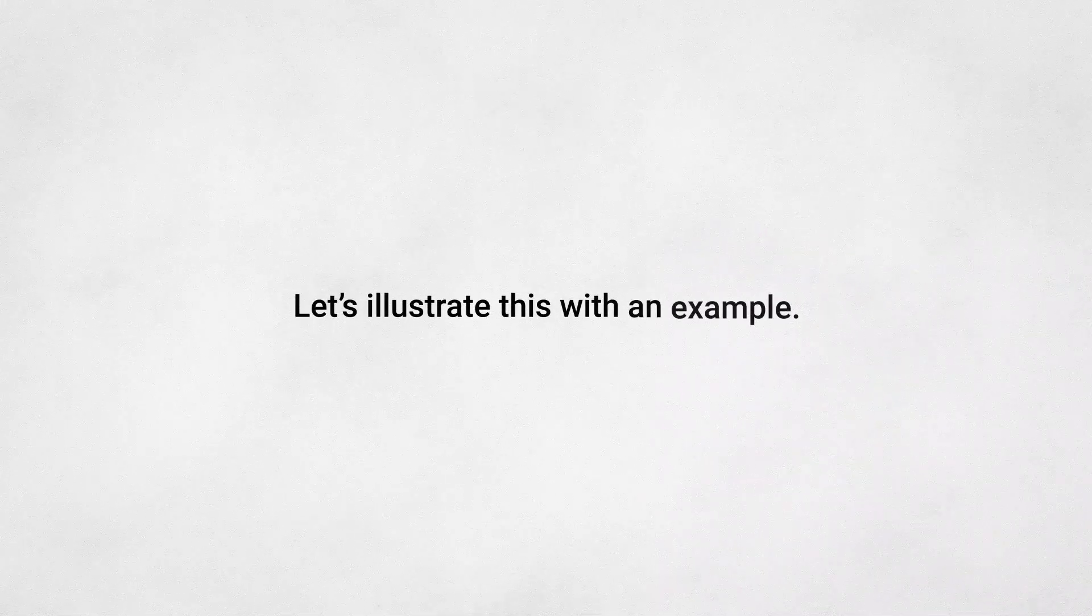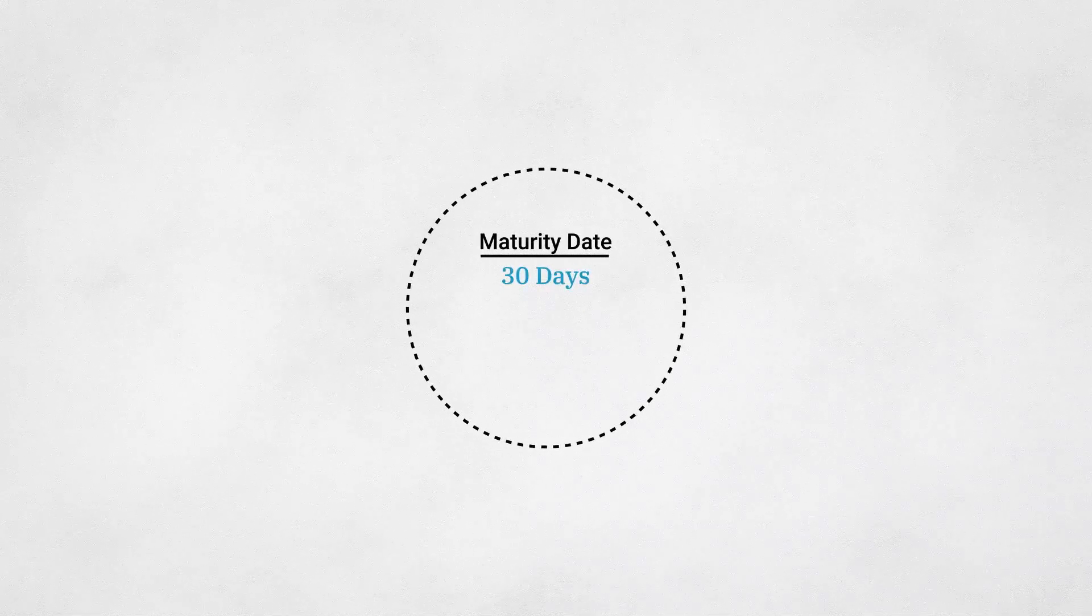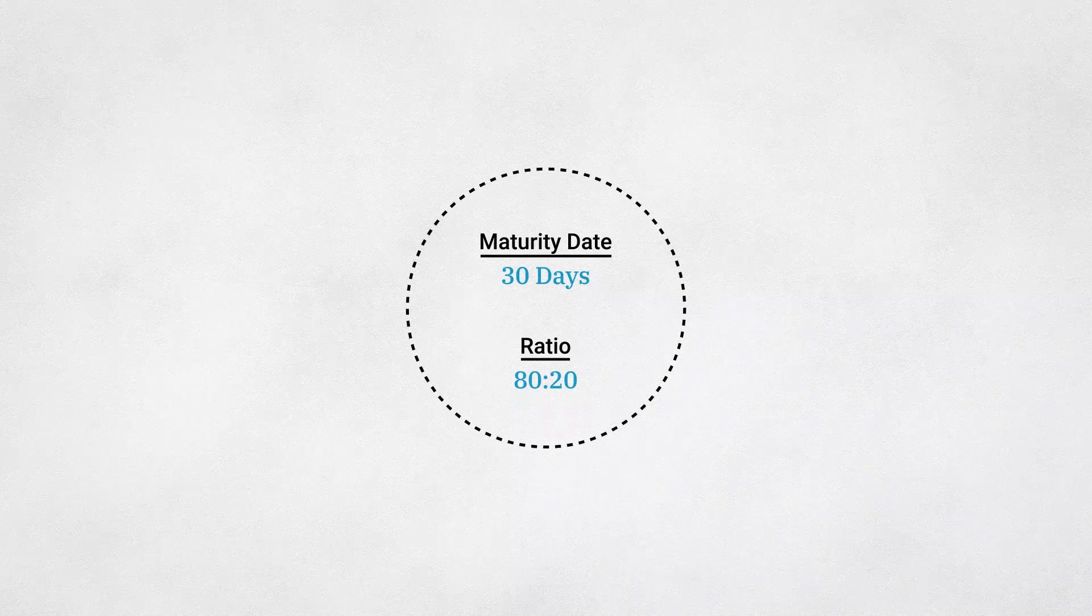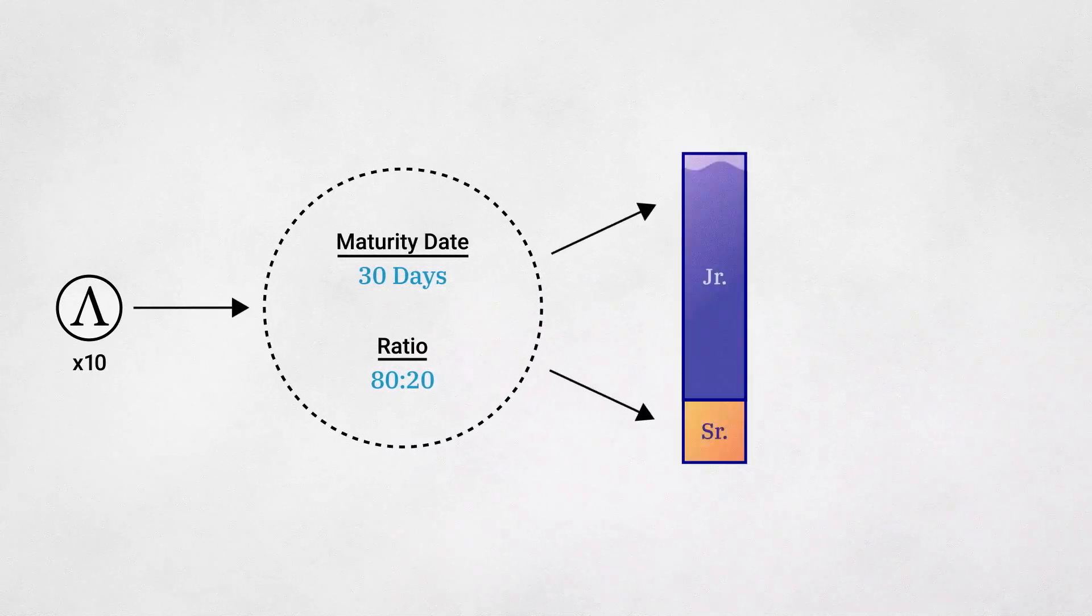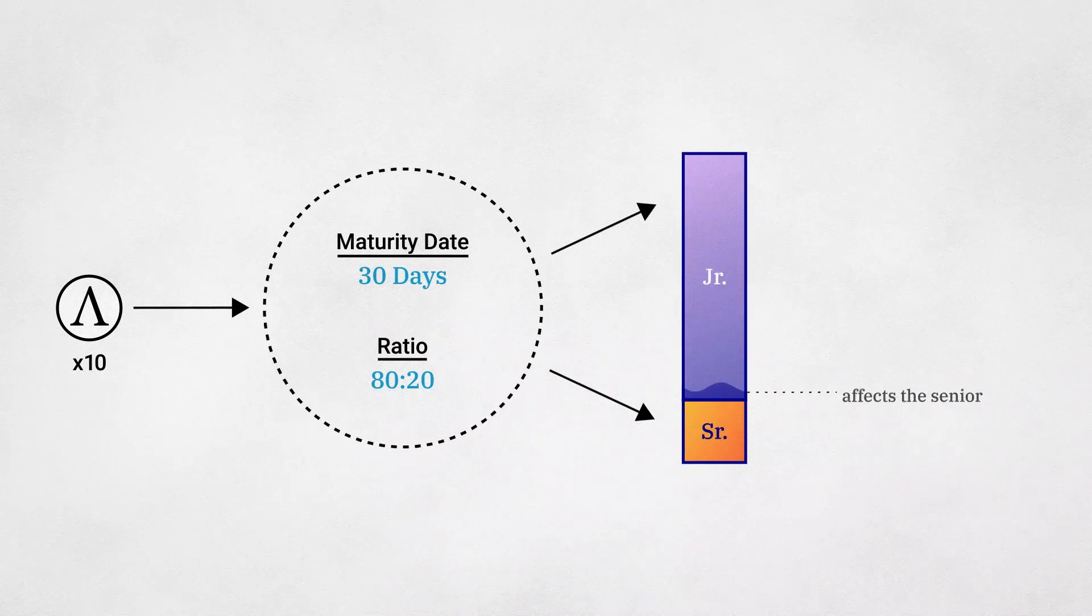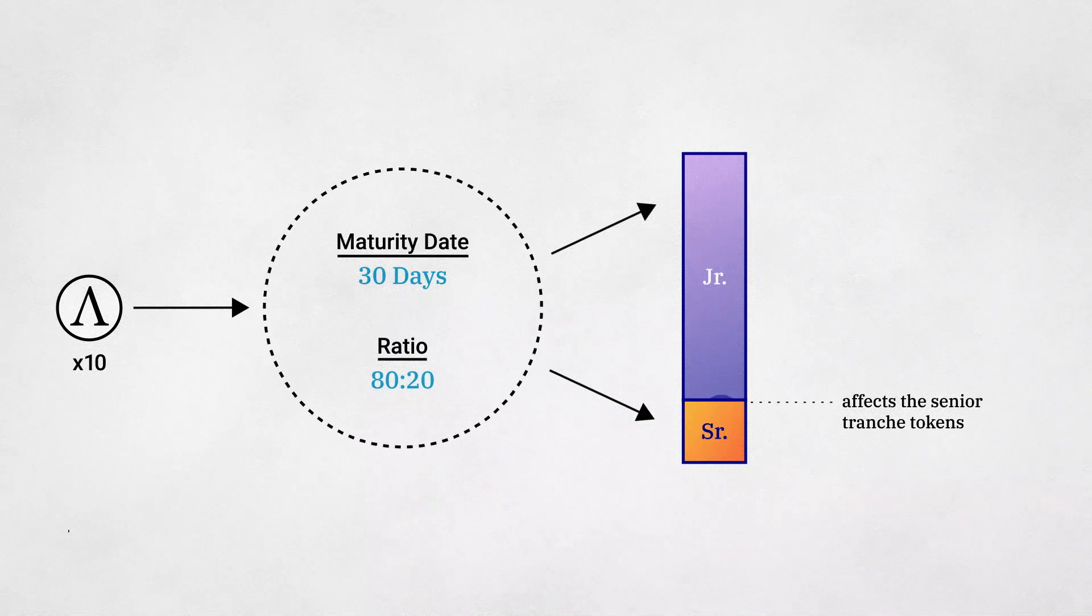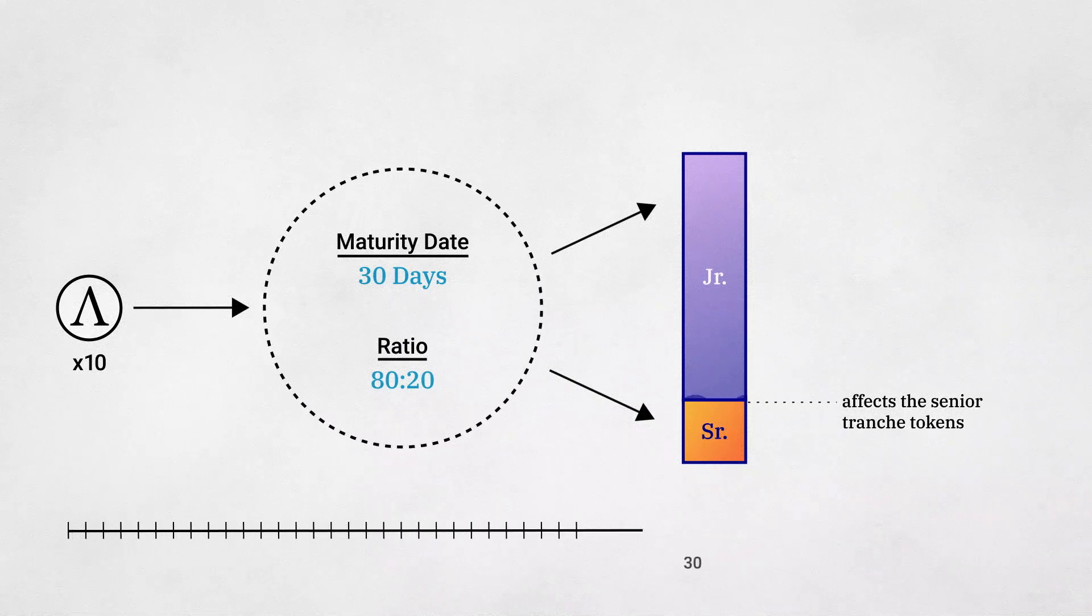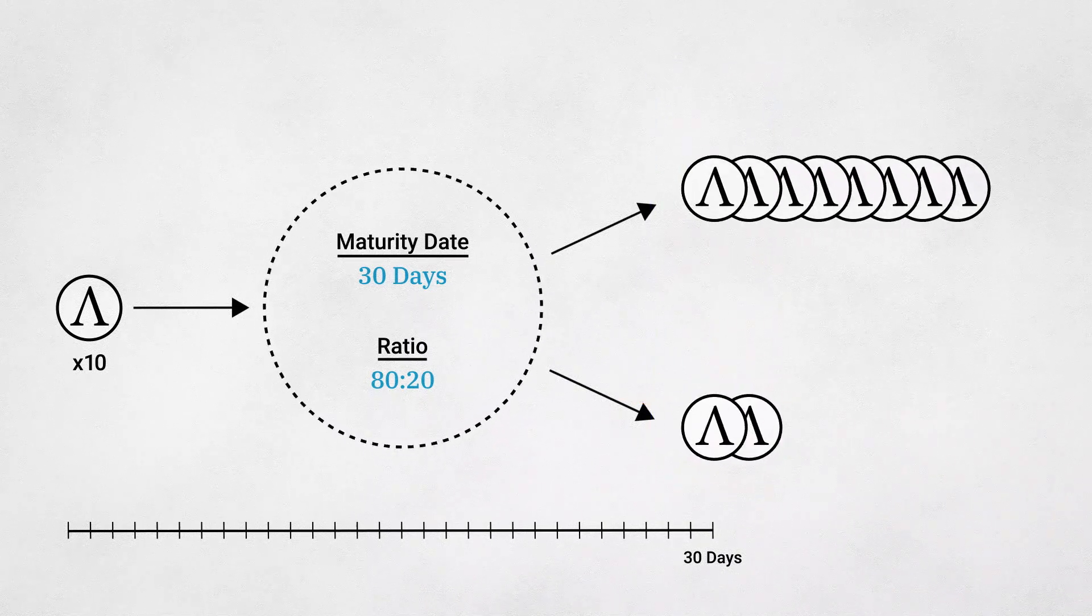Let's illustrate this with an example. Imagine we have a tranche initialized with 30-day maturity and a tranche ratio of 80-20 junior to senior. In this case, all network volatility accrues to the junior tranche tokens until the network contracts by 80% or more, at which point the volatility affects the senior tranche tokens. At the end of the 30-day maturity period, both of these tranche tokens become a redeemable claim on the underlying Ample.